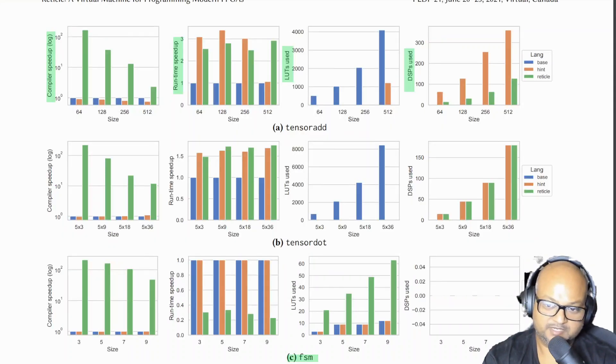In terms of speed of the generated FPGA, as you can see Reticle which is indicated by the green bars here is usually much faster than the baseline in these blue bars which is high level Verilog, but also usually almost as fast as the Verilog with lots of hardware specific hints which is indicated by these orange bars here.